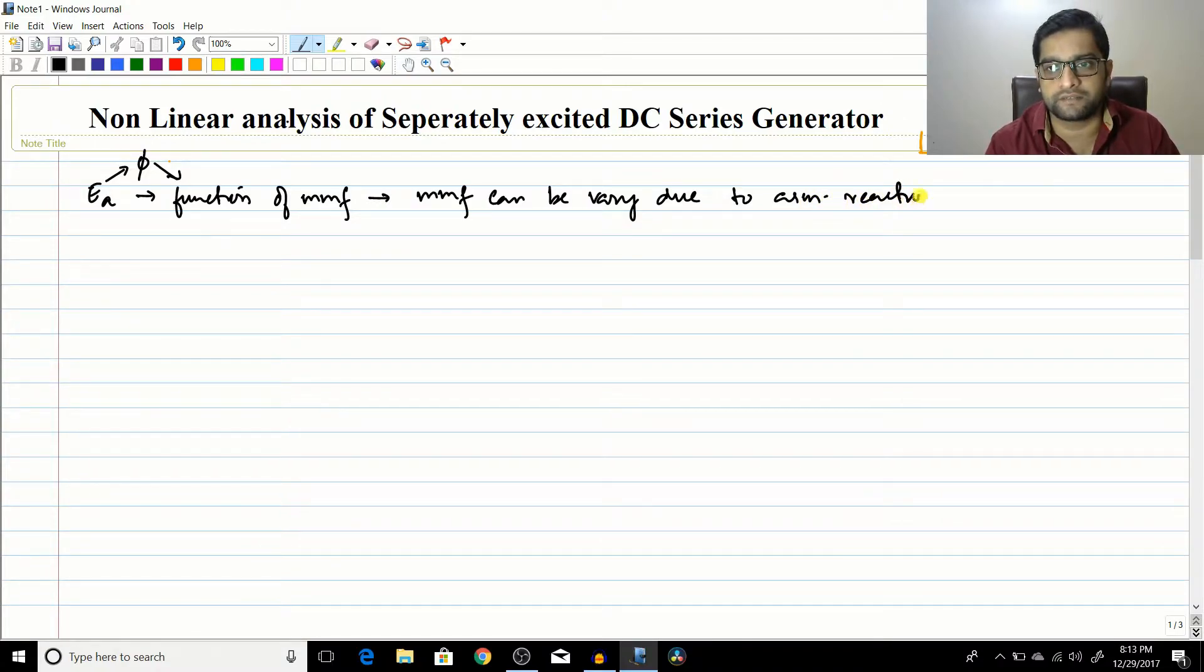So now let us take the flux reduction. What happens is that as the armature reaction increases, the flux weakening increases. So if flux weakening increases, flux drops and Ea which is equal to K phi omega also drops. So this is a problem associated with the armature reaction.